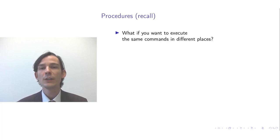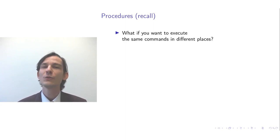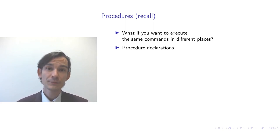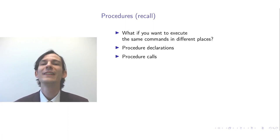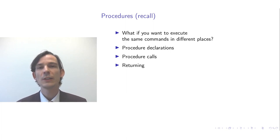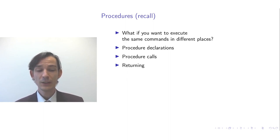Recall from a previous video that procedures are a way of putting an abstraction in a program — a procedure declaration that allows you to execute the same sequence of commands but in a different context. A procedure declaration consists of a procedure name and a body, and whenever you have a procedure call, that means to execute the body associated to the procedure name. We also saw the notion of an early exit: you can return from a procedure before reaching the end of the body.